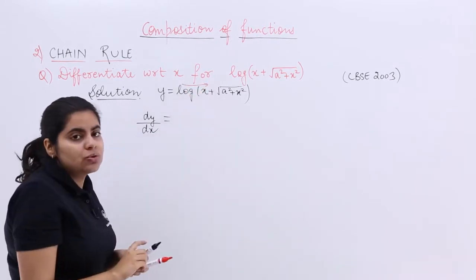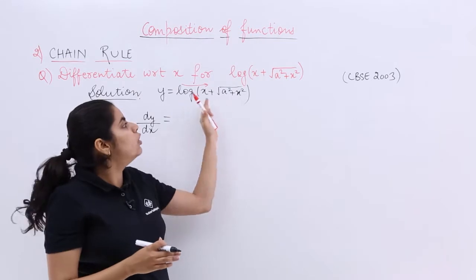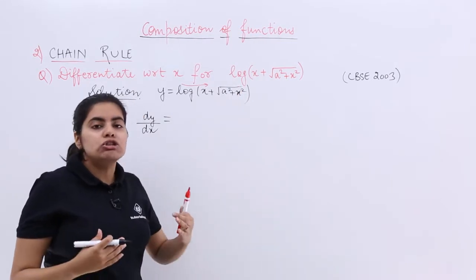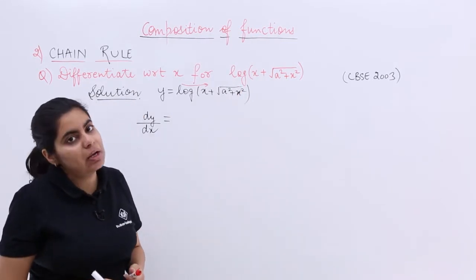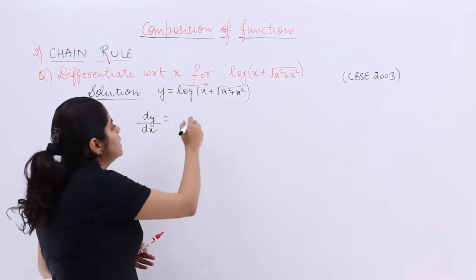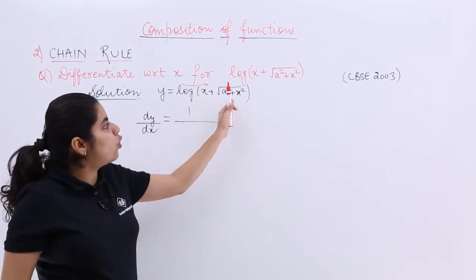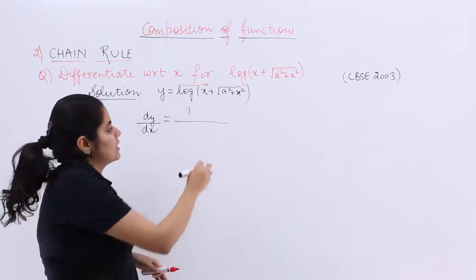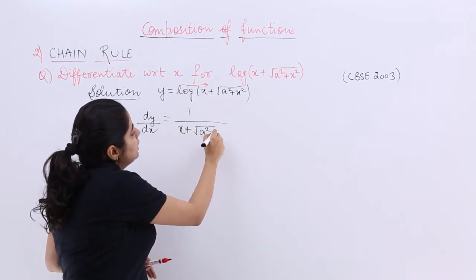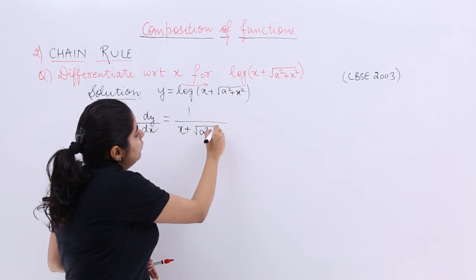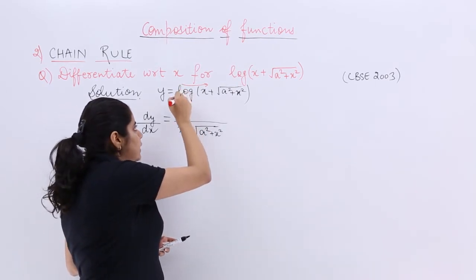You look into the function and see that the outermost part is log. The differentiation of log(x) is 1/x, so you write 1 over the whole inner value. But this is not the final answer — you've only handled the log so far.